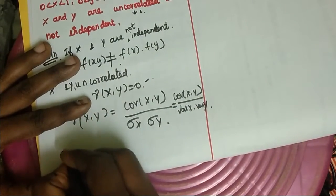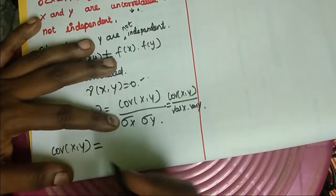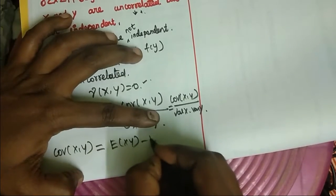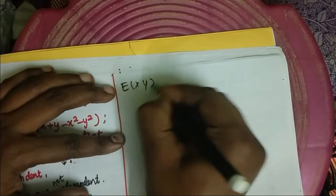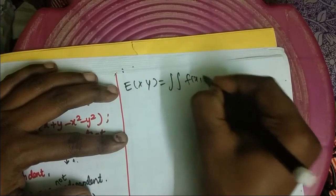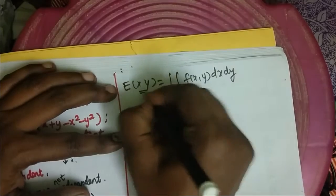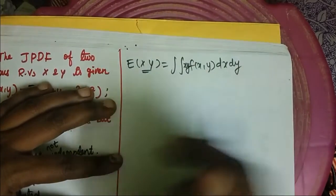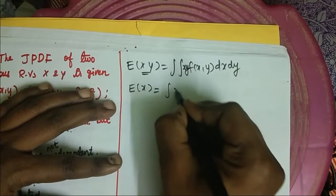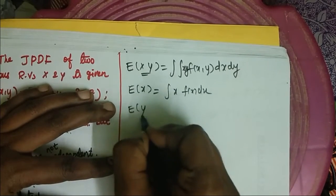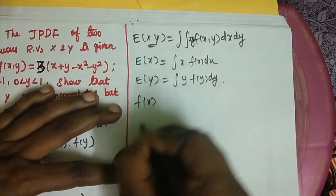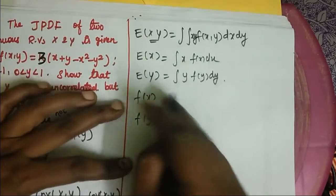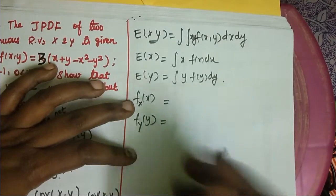The formula for covariance of (x, y) is E(xy) minus E(x)·E(y). E(xy) is computed as a double integral of xy·f(x,y) dx dy. E(y) is a single integral of y·f(y) dy. Here f(x) and f(y) are the marginal density functions.